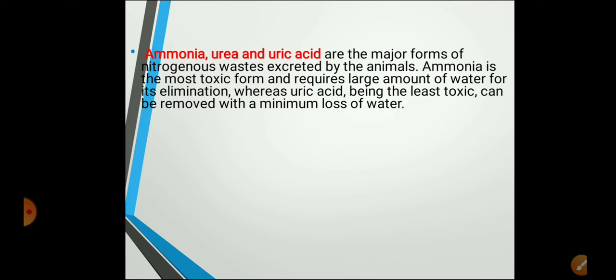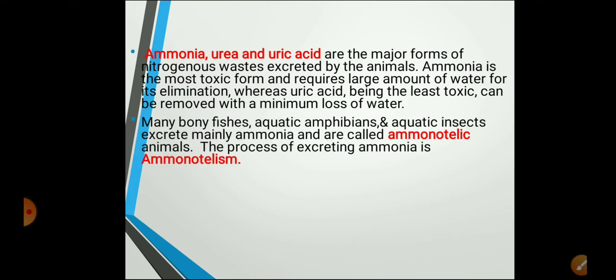Based on the major excretory product, animals are classified into three types. Of these three nitrogenous waste products, ammonia is the most toxic form and it requires a large amount of water to be eliminated. Uric acid is the least toxic nitrogenous waste product. Animals are classified into: ammonotelic organisms, ureotelic organisms, and uricotelic organisms.